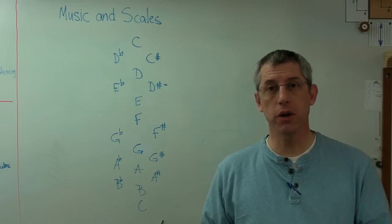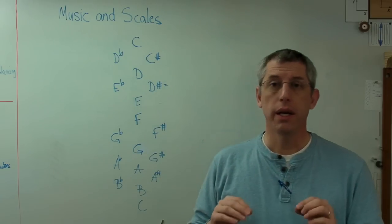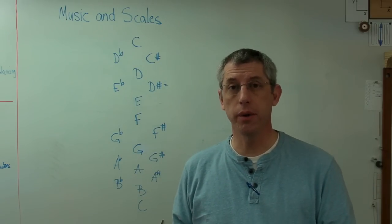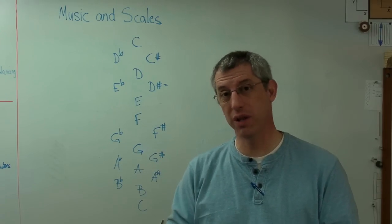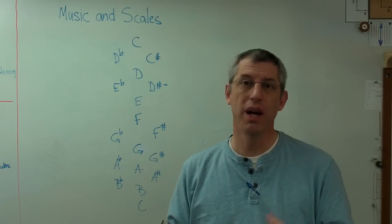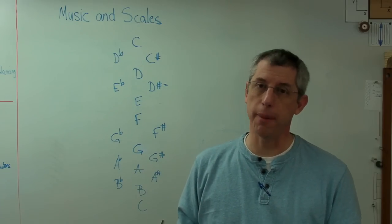And the patterns music are built from are intervals between notes. Now, the smallest possible interval between two notes is called either a half-step, a half-tone, or a semi-tone, depending on who you talk to. I'm going to call it a half-step. Two half-steps is, guess what? A full-step.